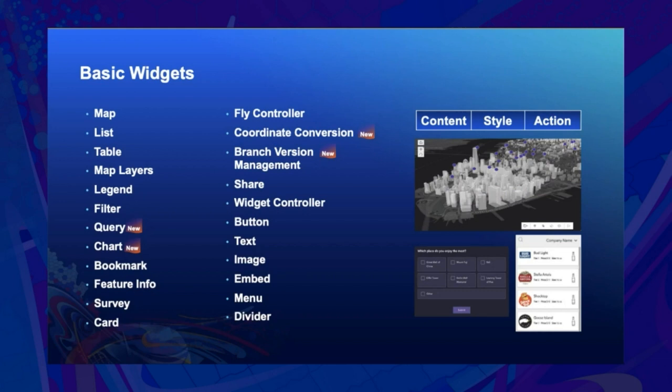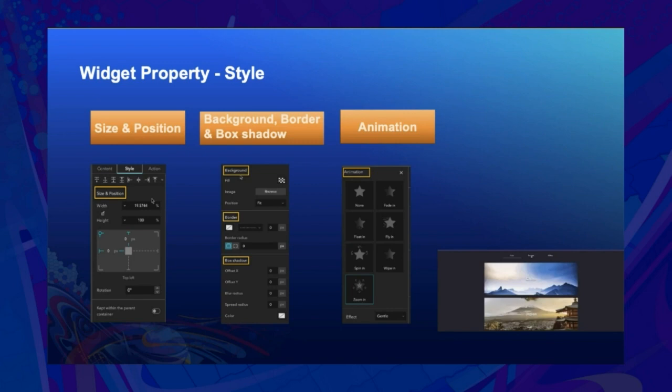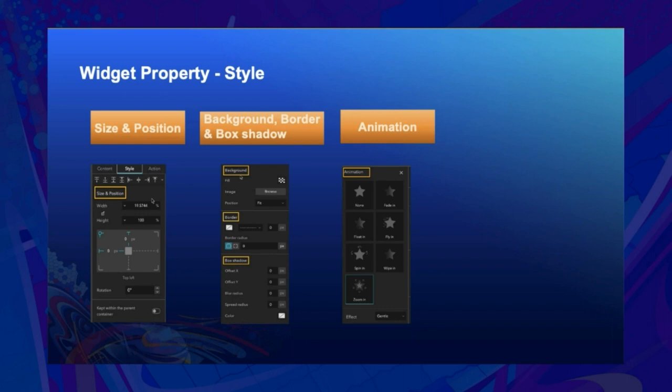Generally, a widget has three properties: content, style, and action. With the content property, you connect the widget to the data and choose options like search on the map. The style property allows you to adjust the width, height, and position of the widget, as well as fine-tune its appearance with background, border, and box shadow.